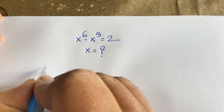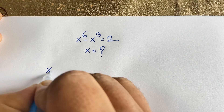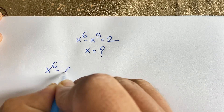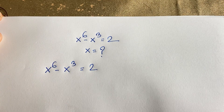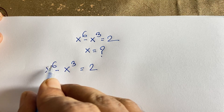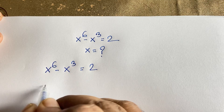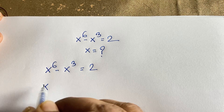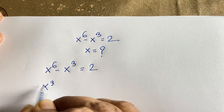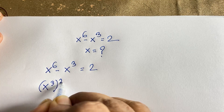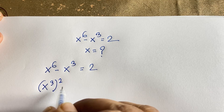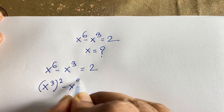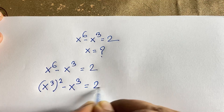Our question is x to the power 6 minus x to the power 3 is equal to 2. At this moment, x to the power 6 can be written as x to the power 3, whole to the power 2 — because 3 times 2 equals 6, according to exponential rules — minus x to the power 3, is equal to 2.